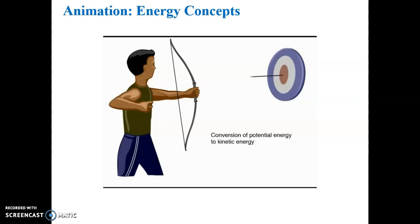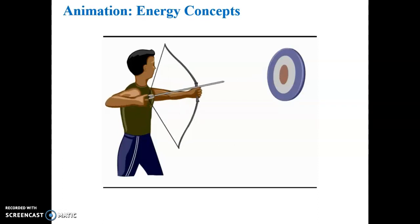When the arrow hits the target, its motion ceases. If energy is neither created nor destroyed, where did the energy of the flying arrow go? When energy is converted from potential to kinetic, some can be used to do work, but some ends up as heat — a type of kinetic energy that is the random motion of atoms and molecules.